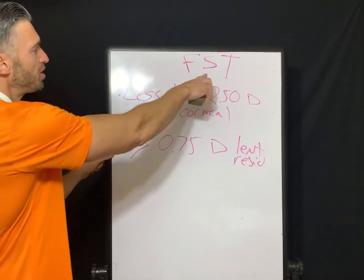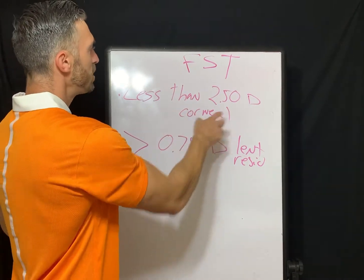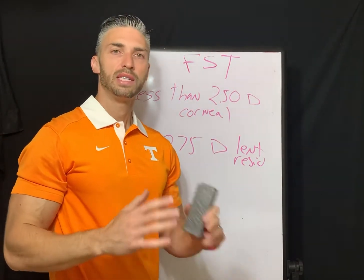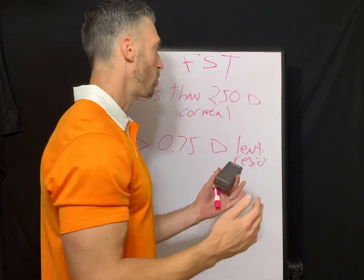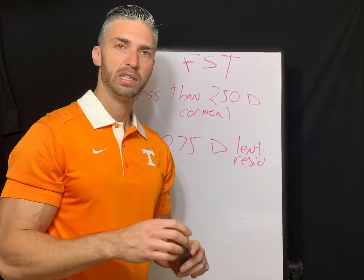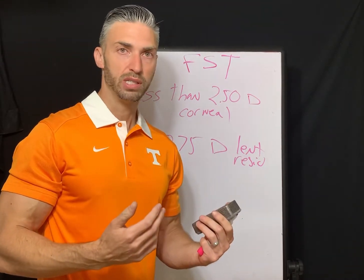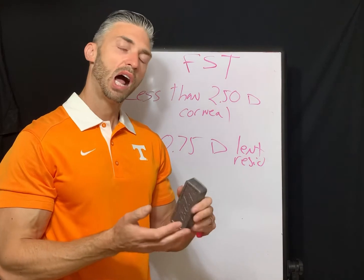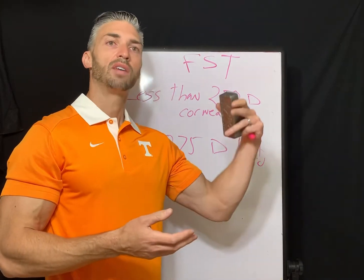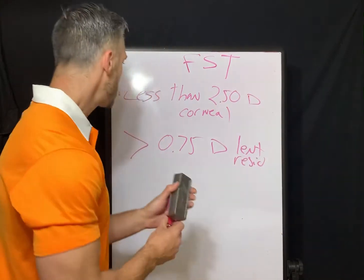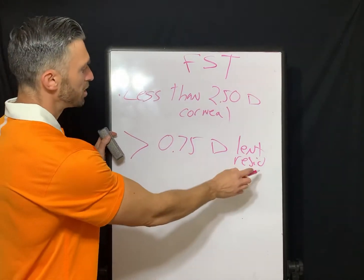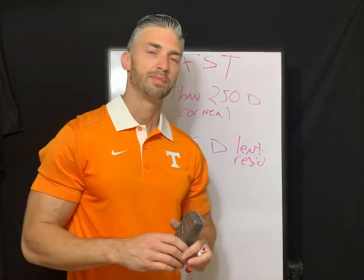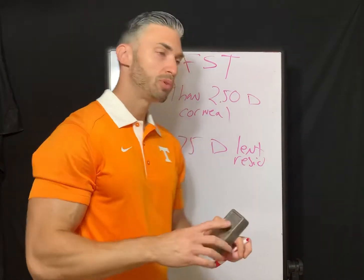On the test, they're not going to give you a borderline case like two and a quarter diopters of corneal astigmatism — it's going to be obvious, like a half diopter of corneal astigmatism. They're going to highlight the fact that there's a lot of residual astigmatism. It might be two diopters of lenticular astigmatism and only half a diopter of corneal astigmatism. Let me go through an example to show that.